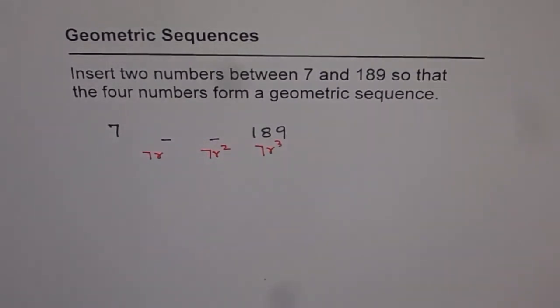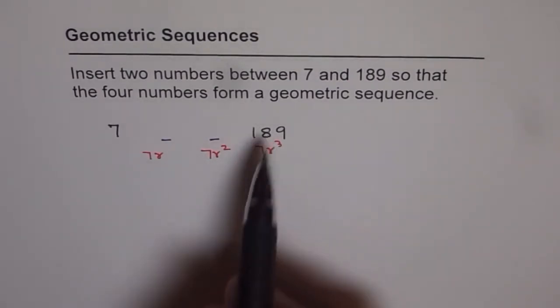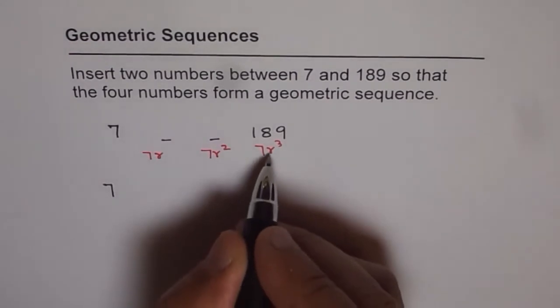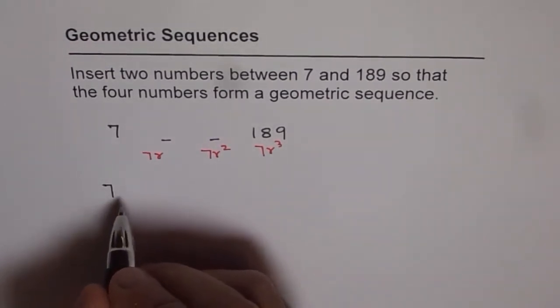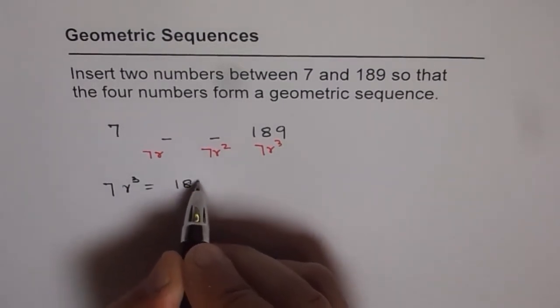Now using this logic, we can find what r is. Since we know 7 times r cubed is 189, we can use this method to find the value of r, the common ratio. 7 times r cubed is equal to 189.